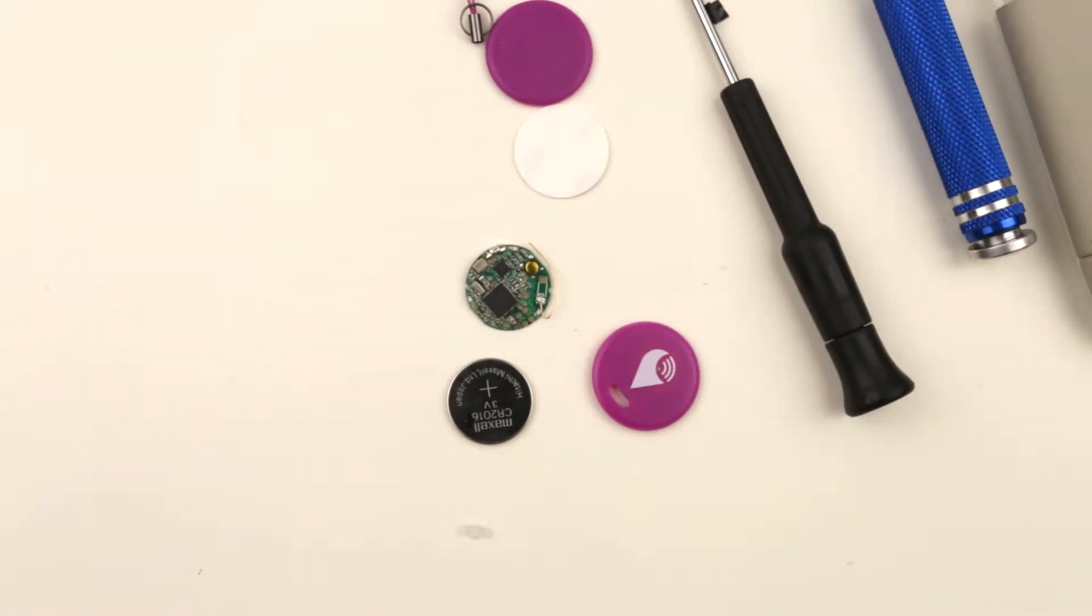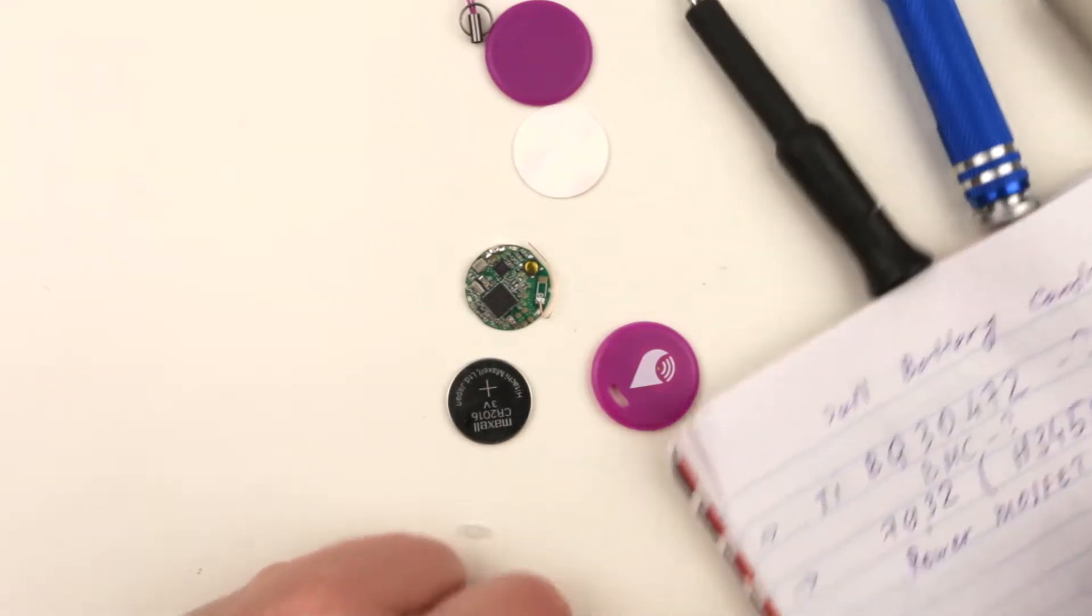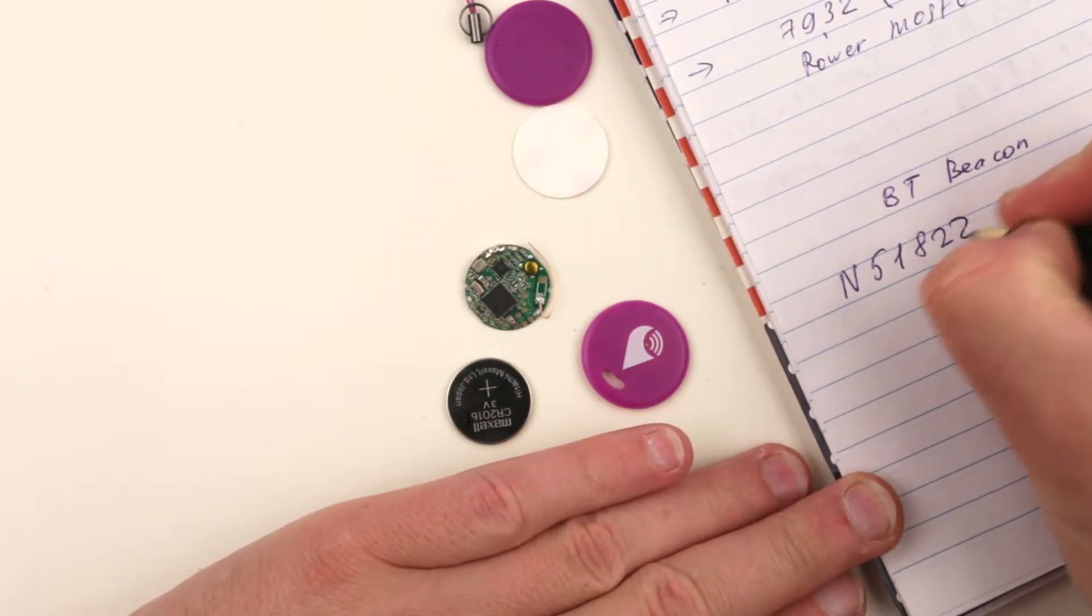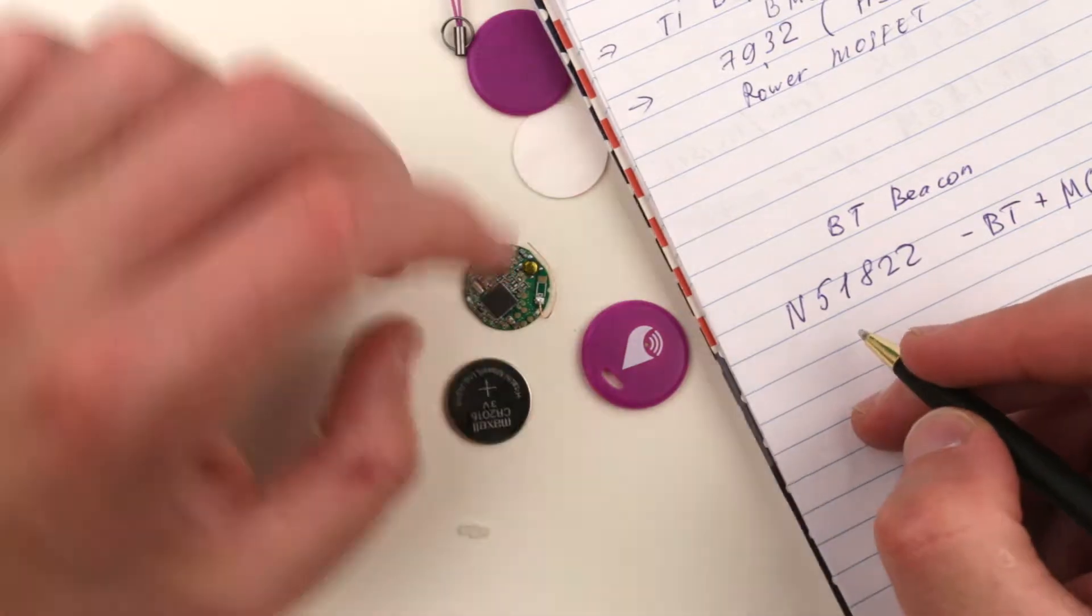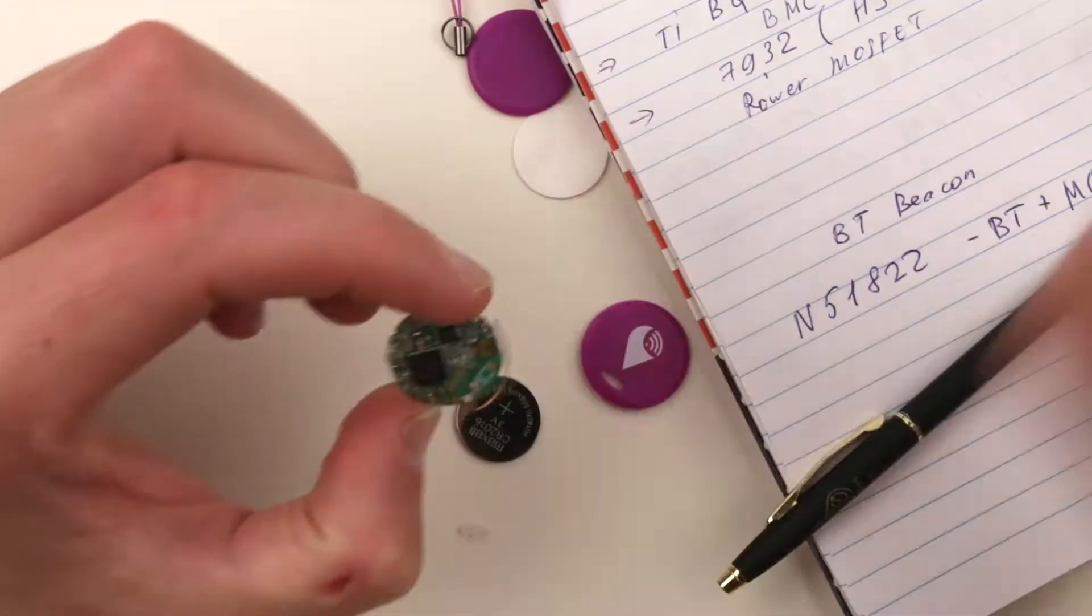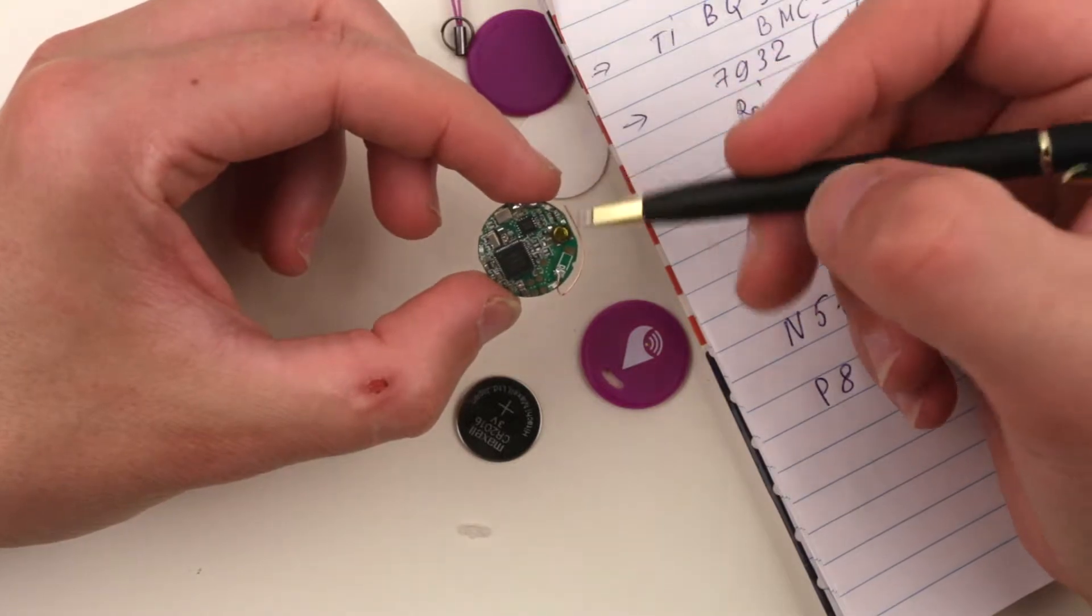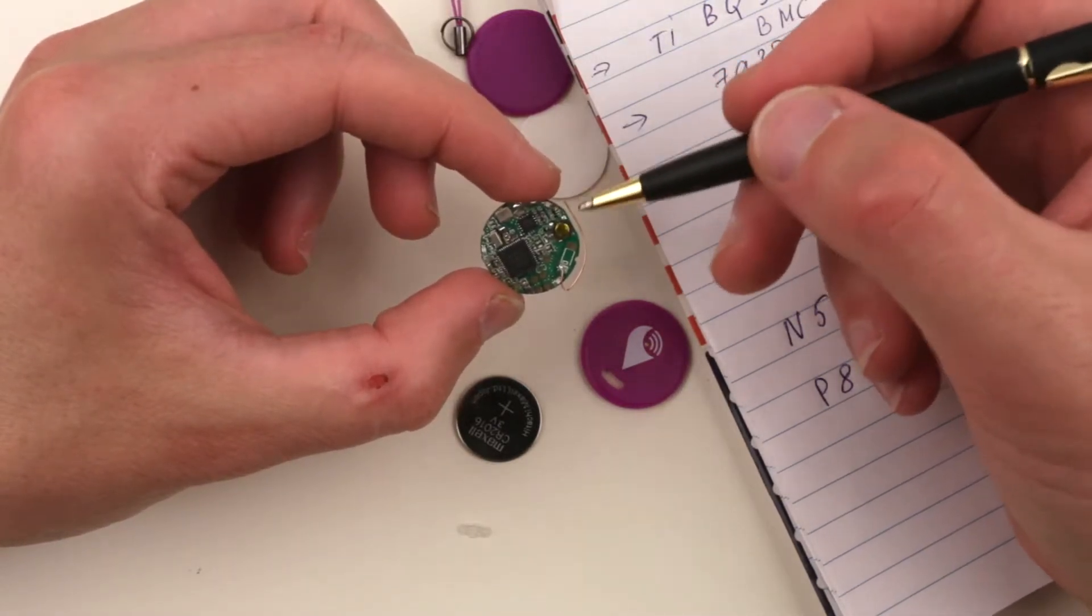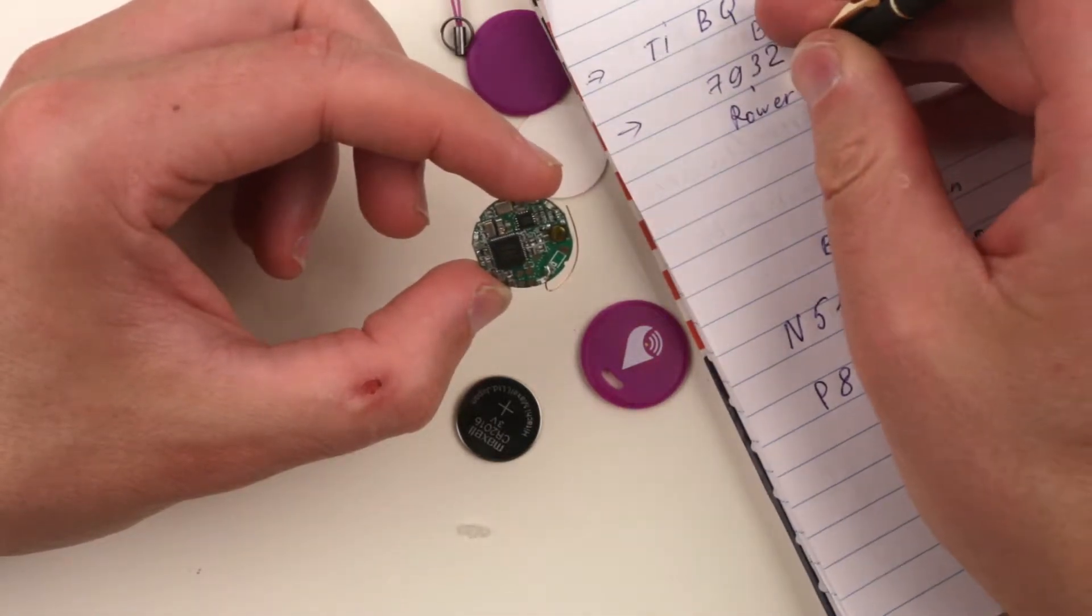Let me write it down. So what we have: BT beacon, N51822, it's Bluetooth, probably plus some sort of microcontroller MC. And the other guy is P8904. This little guy has four... factor of some sort of gyro or accelerometer, but I don't think it is unless it has some feature to detect vibrations. I have no idea what it can be. Let me check, I'll be back.